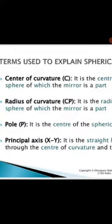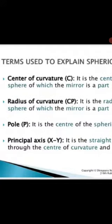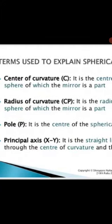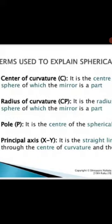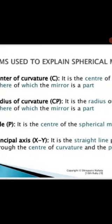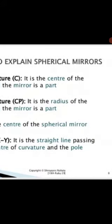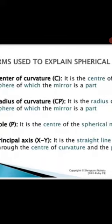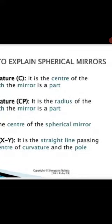I told that a line passes through the lens or the spherical mirror is called as principal axis. That is X-Y. It is the straight line passing through the center of curvature and the pole.